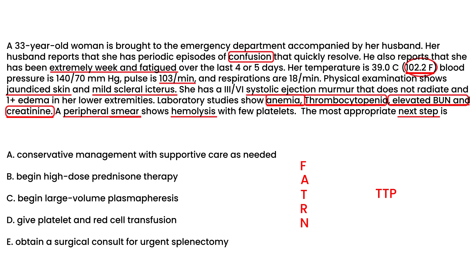She has the full classic pentad — fever, anemia, thrombocytopenia, elevated BUN and creatinine, and neurologic confusion — confirming TTP, with the peripheral smear supporting that. The most appropriate next step is plasma exchange: removing large amounts of plasma removes the antibodies damaging the ADAMTS13 enzyme, and replacing it with fresh frozen plasma restores the normally functioning enzyme. This is done via large volume plasmapheresis — taking out the bad and putting in the good.